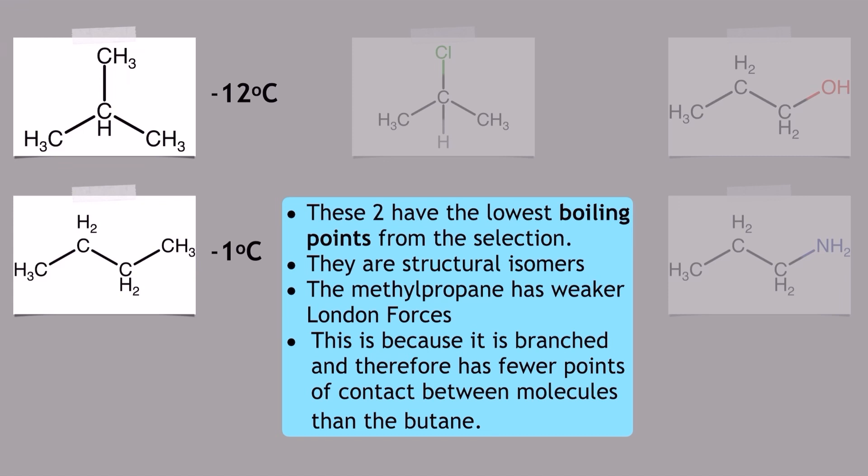But as we can see, even though negative one is still quite a low boiling point, the boiling point of the butane is higher than that of the methylpropane. And the reason for that is because the methylpropane has actually got weaker London forces compared to the butane.